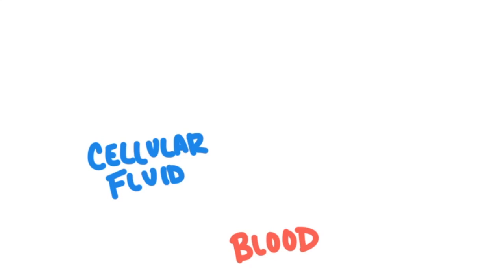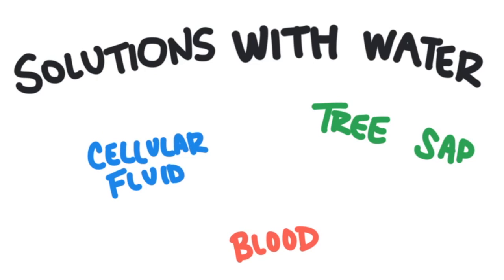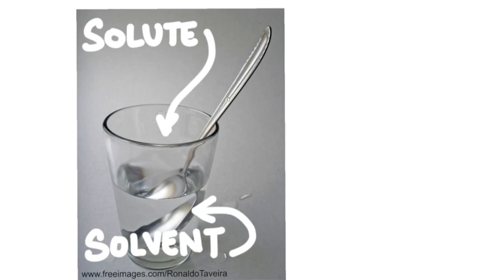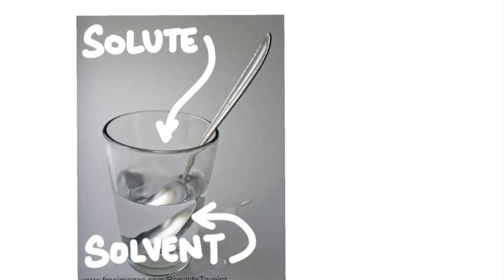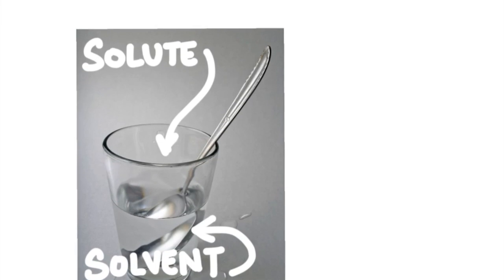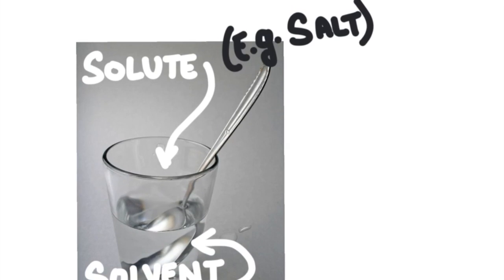Cellular fluid, blood, tree sap, these are many solutions in living things, and the solutions inside of living things are ones that have water as the solvent. A solution is made up of two parts, a solute and a solvent. The solute is the substance that dissolves into the solvent. Like mixing salt into water, the salt is the solute, water is the solvent, and together they are the solution.